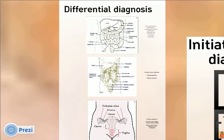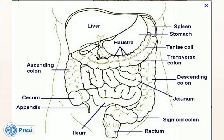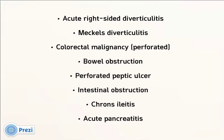It is important to consider the differential diagnosis for right iliac fossa pain. The first group of potential differential diagnoses are other bowel-related pathologies. These importantly include diverticulitis; colorectal malignancy should also be considered, as well as bowel obstruction, perforated peptic ulcer, and other causes of inflammation.